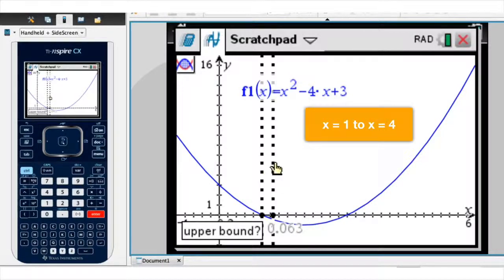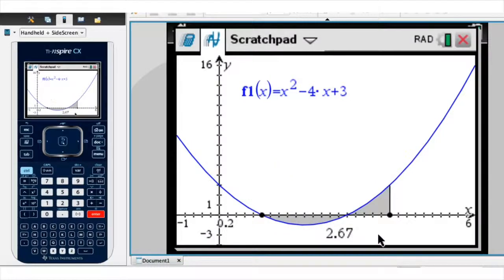It's now asking for the upper bound. And as we just said, the upper bound is 4. So I go ahead and type 4, absolutely anywhere. And I click enter. And we're done. The enclosed area is equal to 2.67.